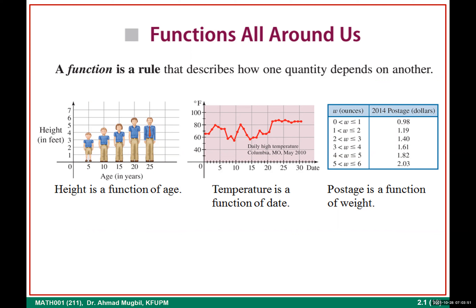Other examples: distance depends on time, and speed also. You may have one quantity depending on more than one quantity, but here we are talking about single-variable functions. For example, from mathematics: the area of a circle depends on the radius, so the area is a function of the radius — when you change the radius, the area changes.